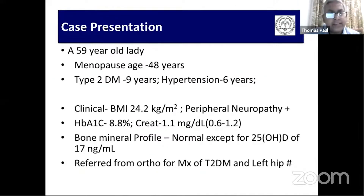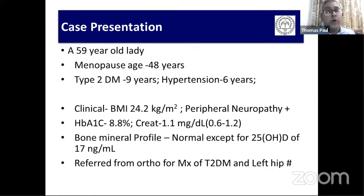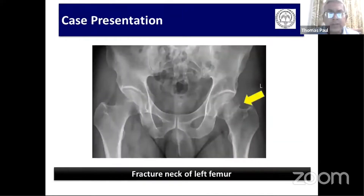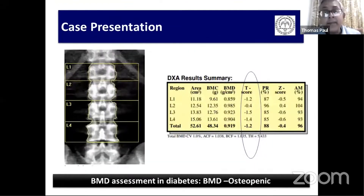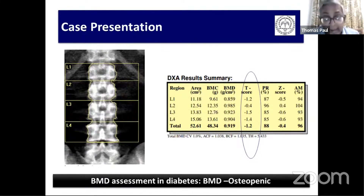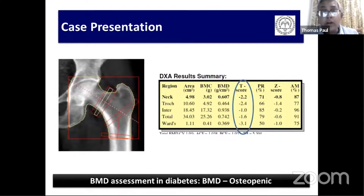The second case is a 59-year-old lady, menopause at 48 years, diabetes for many years, BMI is okay, some complications present, with suboptimal glycemic control and mild vitamin D deficiency. She was admitted to an orthopedic ward for a hip fracture and a consult was sent to us for diabetes management as well as medical management of the left hip fracture. The X-ray is obvious. She had come earlier to the internal medicine department and a DEXA done showed not osteoporosis but osteopenia — minus 1.2 at lumbar spine as well as femoral neck/total hip. The patient was given only calcium and vitamin D and was not evaluated further.